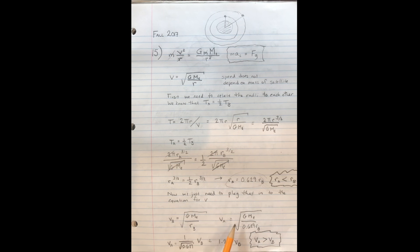When we work this out, we get that v_A equals 1 over the square root of 0.629 v_B, which equals 1.26 v_B. Therefore, v_A is bigger than v_B, and that gives us the solution to this problem.